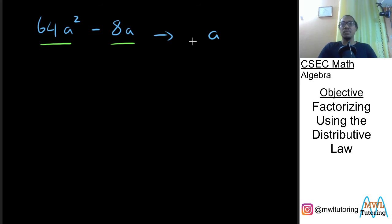But we also have another common factor because 64 and 8, 8 is actually a factor of 64. 8 by 8 is 64. So 8 is also a common factor. So our entire common factor is the term 8a. And now we open our brackets.